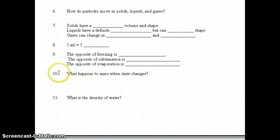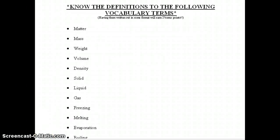Number 10, what happens to mass when state changes? And the correct answer is nothing. It stays the same. It remains constant. And number 11, what is the density of water? The correct answer should have been 1 gram per milliliter or 1 gram per cubic centimeter. Either will work. Make sure you know the definitions to the following vocabulary terms. Be sure to read the fine print.